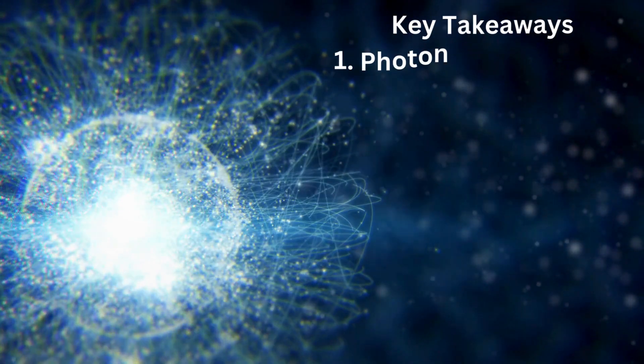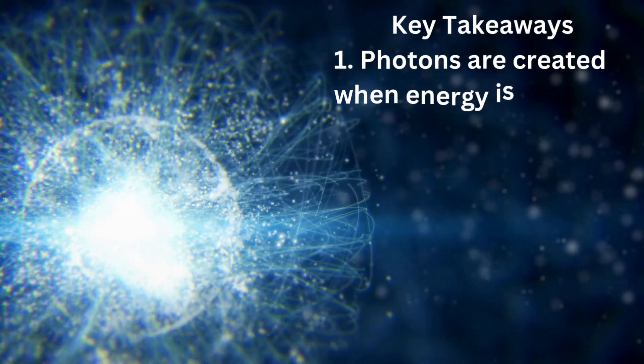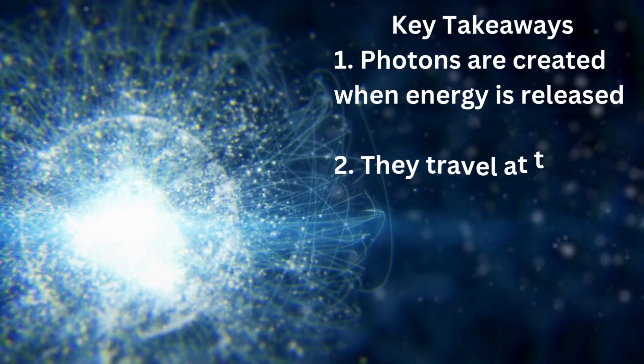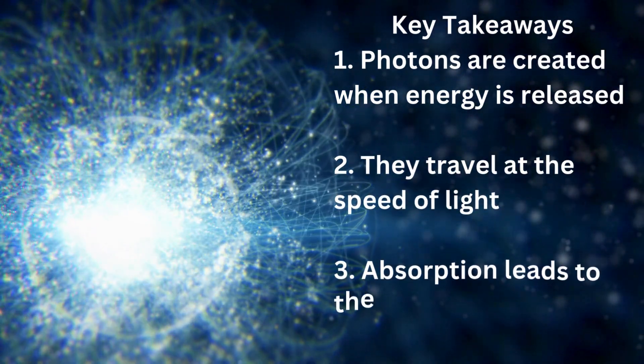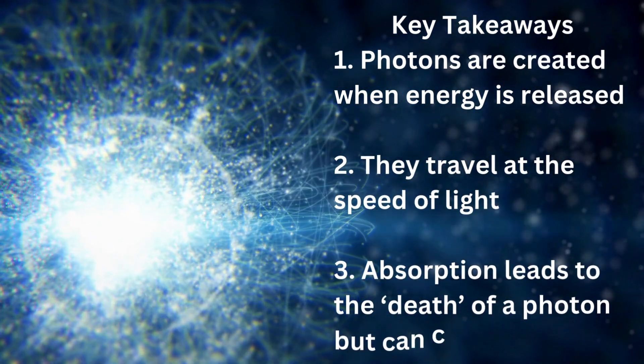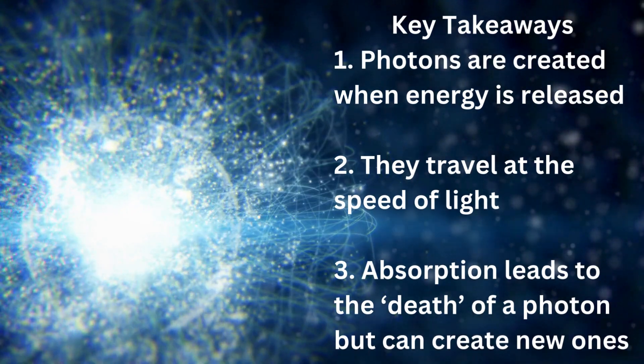Key takeaways: 1. Photons are created when energy is released. 2. They travel at the speed of light. 3. Absorption leads to the death of a photon but can create new ones.